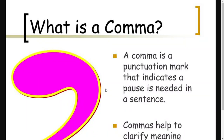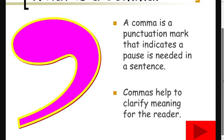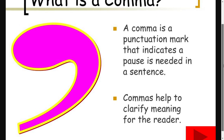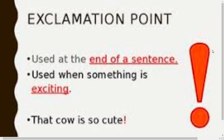Now let's see what a comma is. A comma is a punctuation mark which indicates a pause in the sentence. Commas also help to clarify the meaning for the reader.